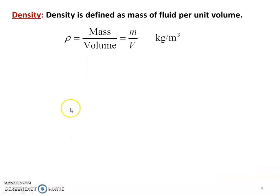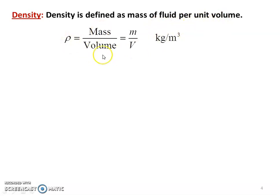We define the property density. This property is common to the fluid mechanics subject also. Density is defined as mass per unit volume: ρ = M/V, in kilogram per meter cube.